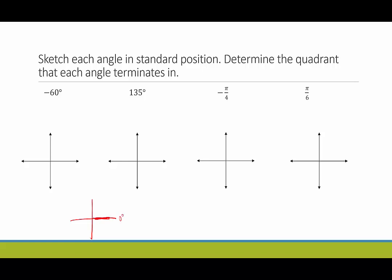If the initial side is here and the terminal side goes straight up, that would be 90 degrees — it makes the L shape. If it goes towards the negative x-axis, that's 180 degrees. If it goes down the negative y-axis, that would be 270 degrees. And if it does a complete circle, that's 360 degrees. I use those as a guide to tell me which quadrant the angle terminates in.